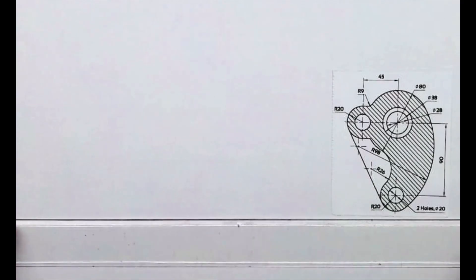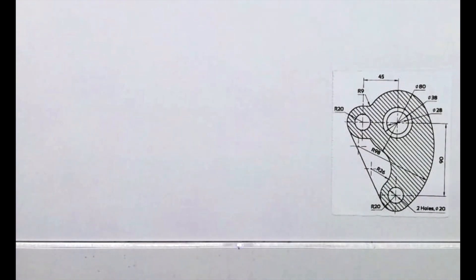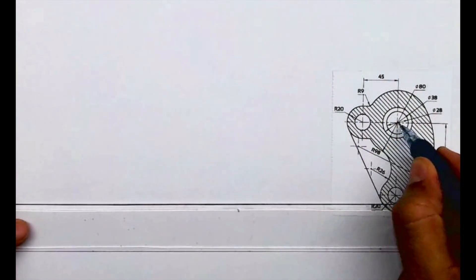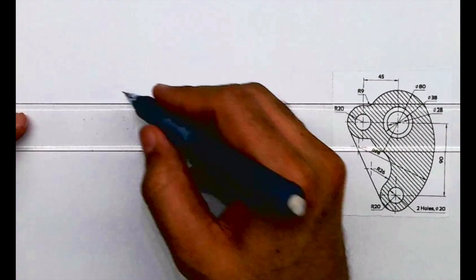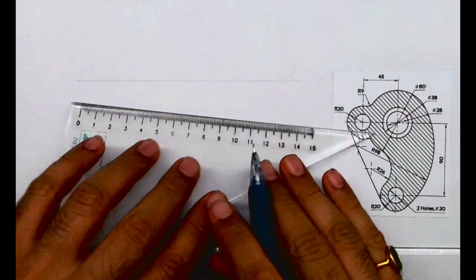Welcome to technical drawing. Today we'll see this sum. We need to copy this diagram as it is. So first we'll start with these lines. If you see, first I will draw one horizontal line and the distance between the two points would be 45, so I will take 45.